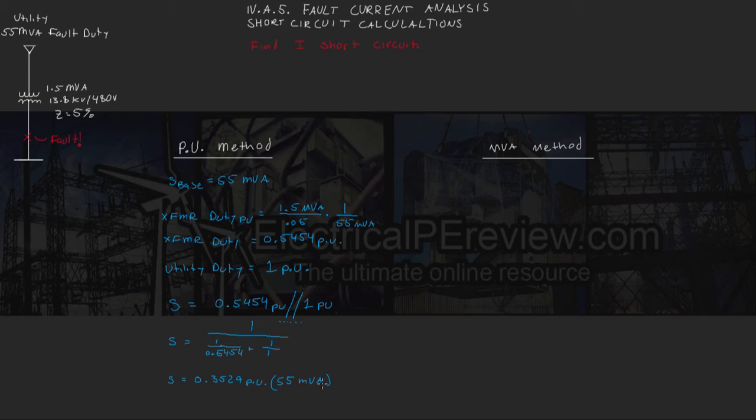This gives us a total fault power of 19.41 MVA. Now, to find our current actually flowing through the fault,